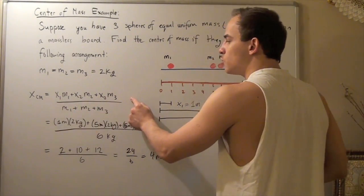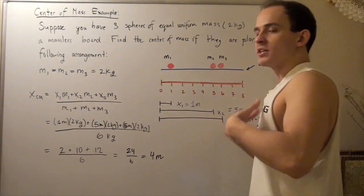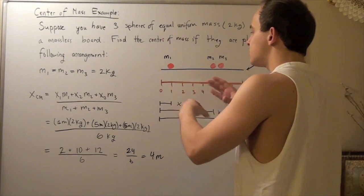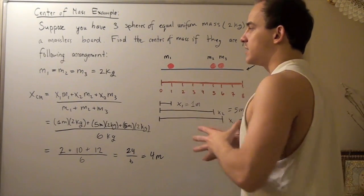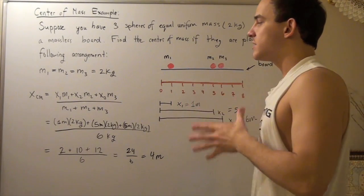And we're dividing the whole numerator by our denominator, by the total mass, because now we're considering this whole system as one single mass of six kilograms, because m1 plus m2 plus m3 gives us six kilograms.